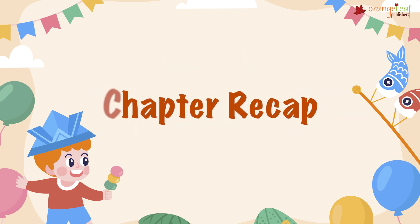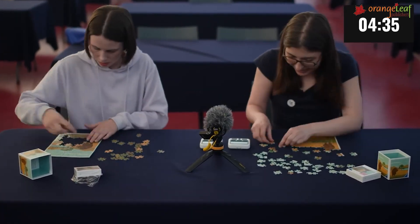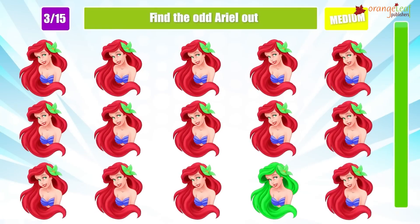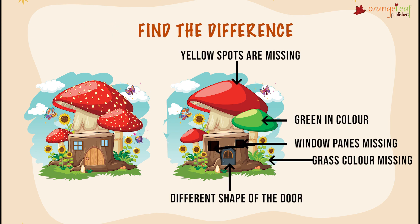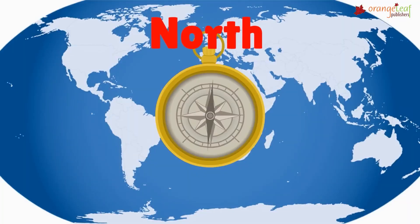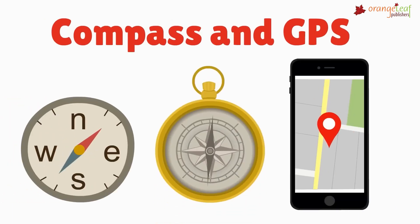Chapter recap: A picture puzzle is a type of puzzle that involves a series of pictures. In the odd one out picture puzzle, we cross out the odd picture. In find the difference picture puzzle, we find the differences between the given pictures. There are four main directions — north, east, west, and south. We can locate an object on a map using a spot.